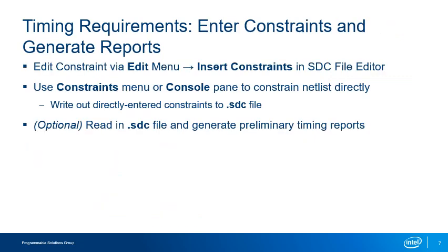Continuing the timing analyzer flow, enter or create constraints in the usual manner, either directly in the console or in the SDC file editor, either manually or with the GUI constraint dialog boxes. Remember that if you are entering constraints in the console, you'll need to write out a .SDC file for use by the Intel Quartus Prime fitter. At this point, you could continue the timing analyzer flow, reading in the .SDC file you've created and generate timing reports. However, note that reports generated at this stage, based off the post-synthesis netlist, only provide preliminary timing numbers for the design.